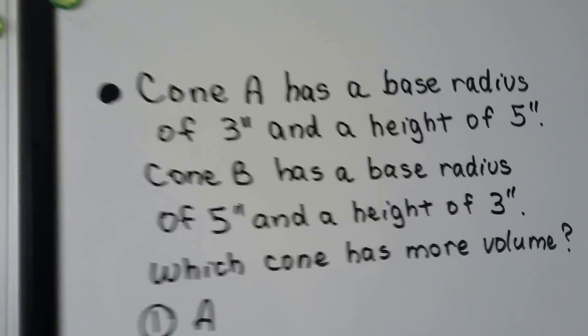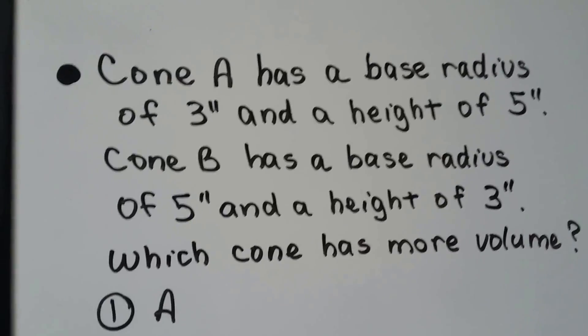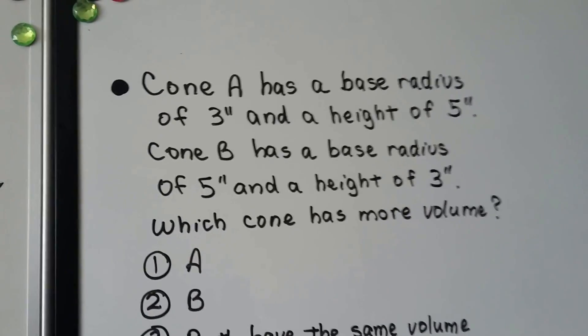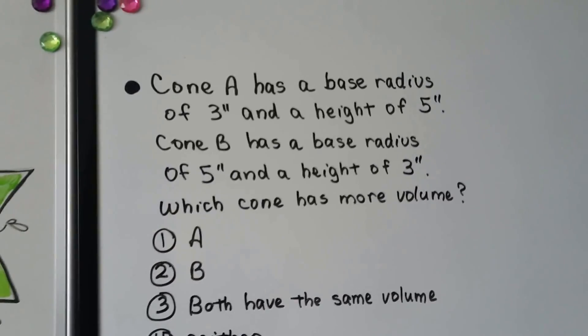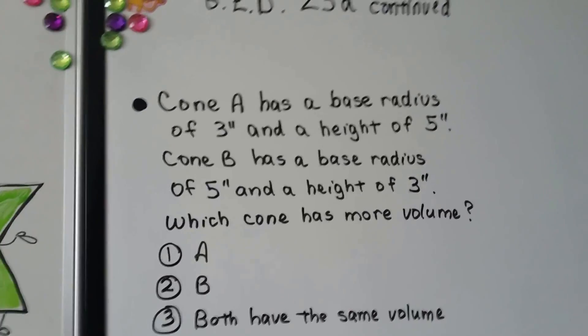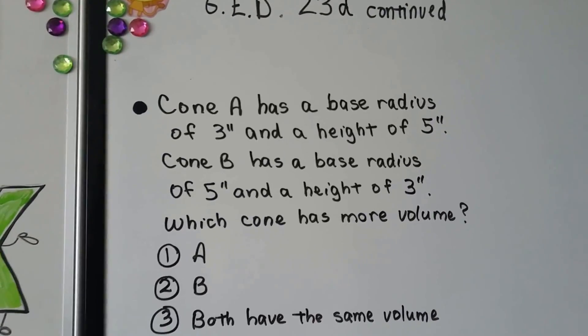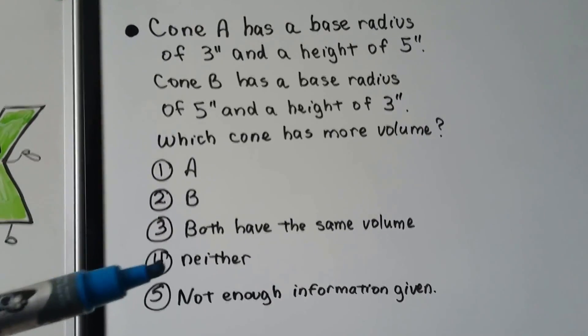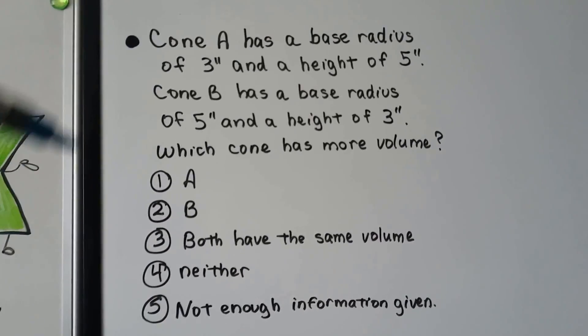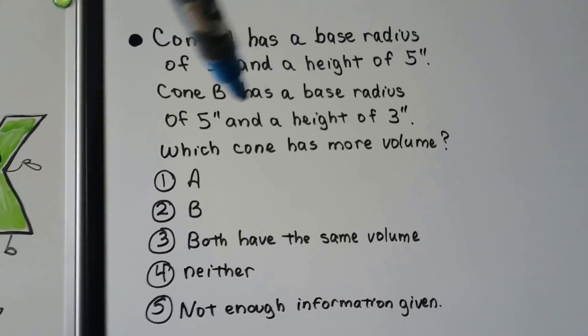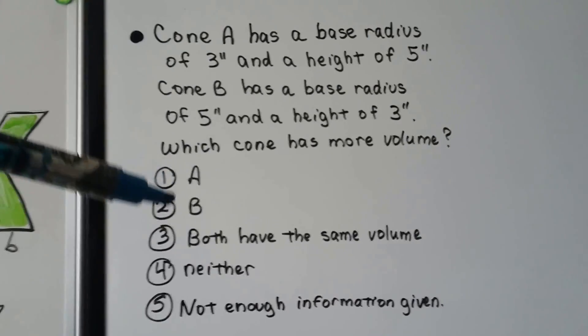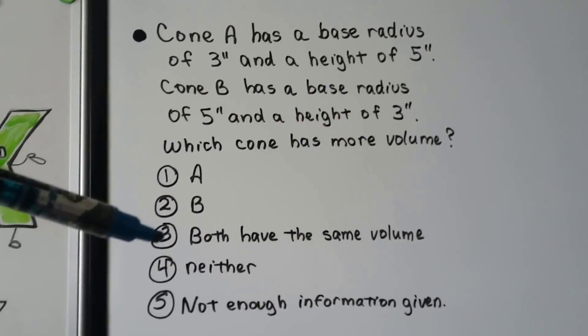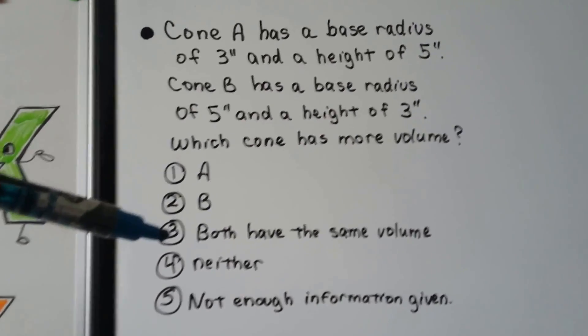Now this one says cone A has a base radius of 3 inches and a height of 5 inches. Cone B has a base radius of 5 inches and a height of 3 inches. Which cone has more volume? Is it A, B, both are the same, neither, or not enough information is given? And you would look at this and say, oh, there's a 3 and a 5 and there's a 5 and a 3. It's the same. And you'd think that you would answer this one and go on to the next question. But you'd be wrong. This is tricky.